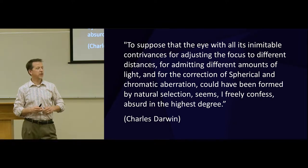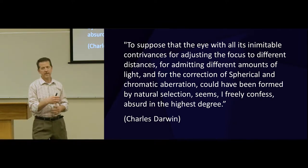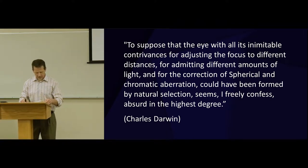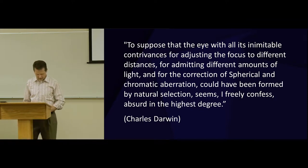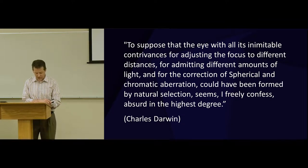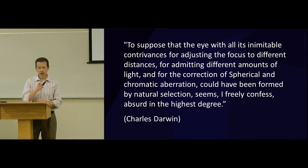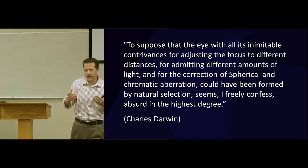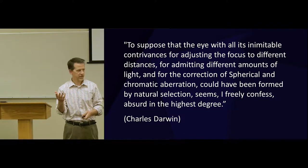Everybody talks about vision because the eye is an incredible organ. Even Darwin did in this very famous statement. To suppose that the eye, with all its inimitable contrivances for adjusting the focus to different distances, for admitting different amounts of light, and for the correction of spherical and chromatic aberration, could have been formed by natural selection, seems, I freely confess, absurd in the highest degree. And then he goes on to say, but I think that's how it happened. And this is how it happened.